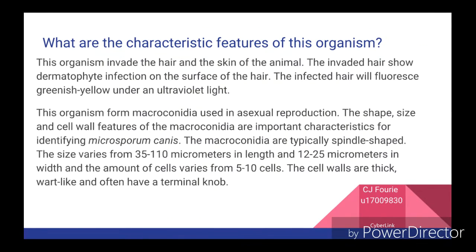What are the characteristic features of this organism? Presented by Jonathan Fourie, student number 17009830. This organism invades the hair and the skin of the animal. The invaded hair shows dermatophyte infection on the surface of the hair. The infected hair will fluoresce greenish-yellow under an ultraviolet light. This organism forms macroconidia used in asexual reproduction. The shape, size and cell wall of this macroconidia are important characteristics for identifying Microsporum canis.